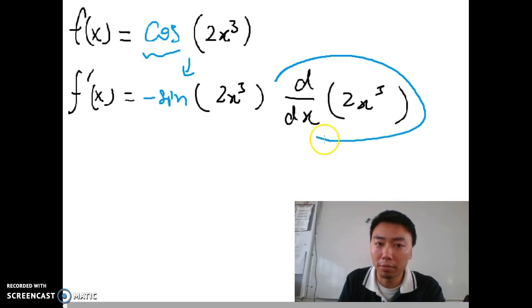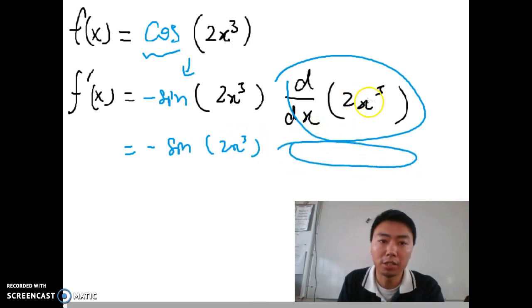And the next step is you have to differentiate this part at the back. So I copy everything that I did just now and then I differentiate the 2x³, which will give me 6x to the power of 2.